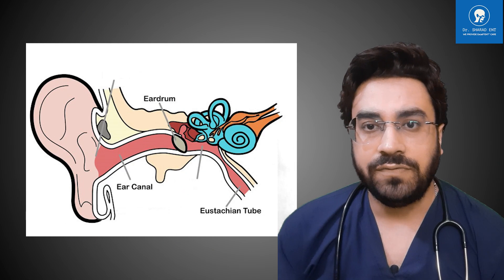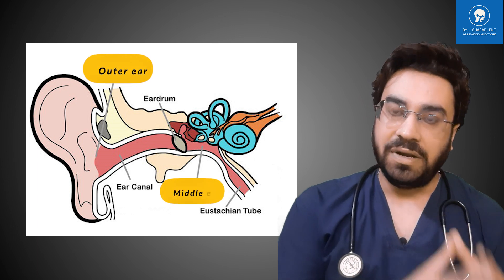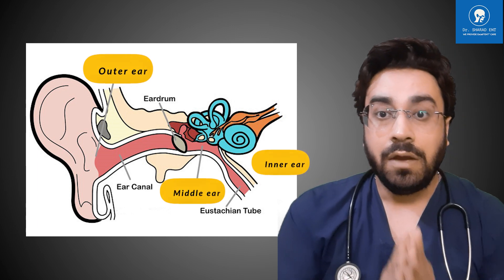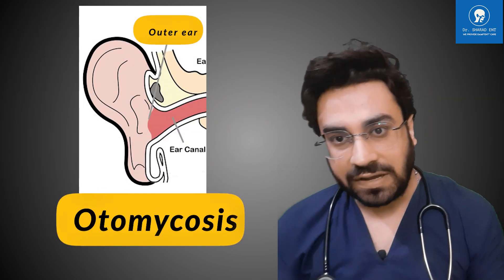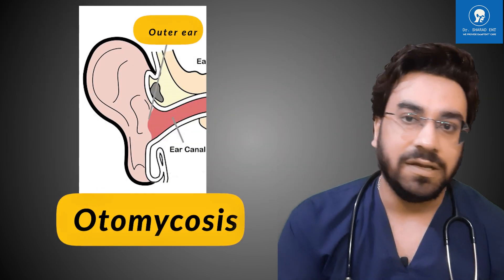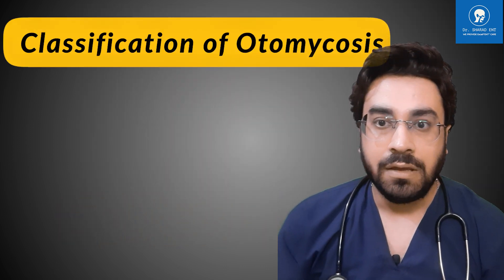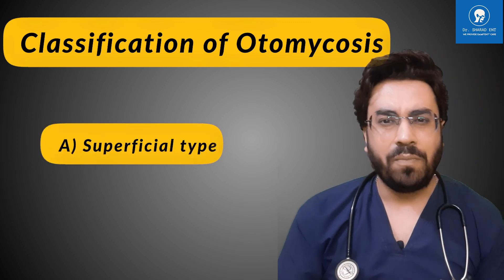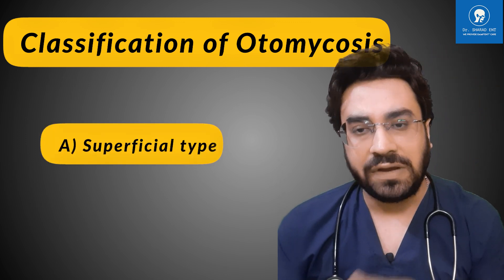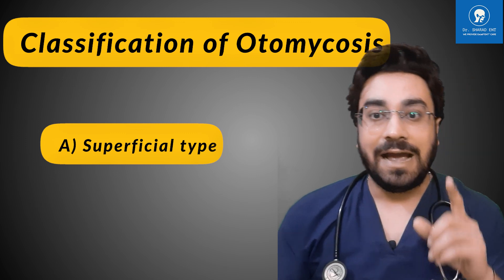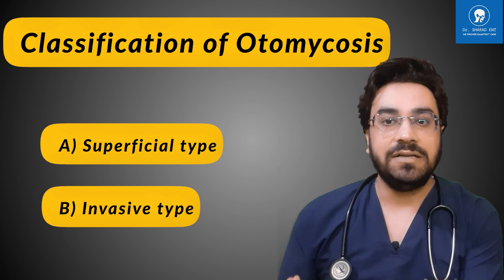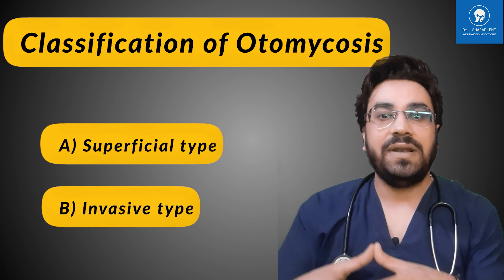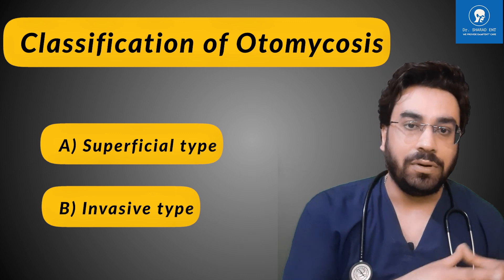The human ear is divided into three parts: outer ear, middle ear, and inner ear. Fungal infection or otomycosis is an infection of the outer ear in which the fungus can infect any part of the ear canal. Fungal infection of the ear can be of two types. The first is the superficial type, which is the most common, in which the fungus infects the skin of the ear canal. The second is the invasive type, a rare infection in which the fungus infects the skin as well as the bone of the ear, also called the temporal bone.